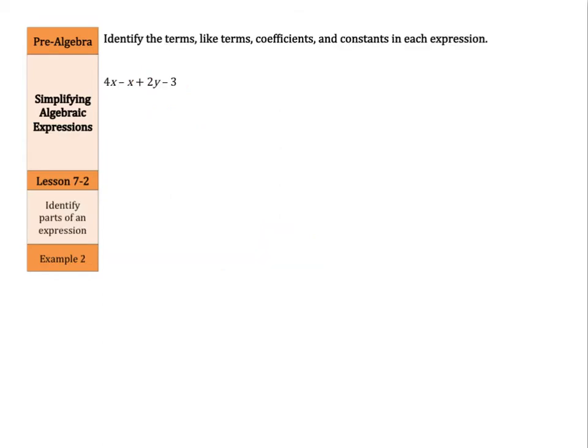Now, let's identify all the different parts, the terms, the like terms, the coefficients, and the constants in each expression. Let's start with the terms. Just listing out all the different terms, we have 4x, comma, negative x, comma, 2y, comma, negative 3. I'm including this negative sign with the x, the subtraction with the x, the subtraction with the 3, as I list out my terms.